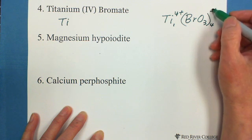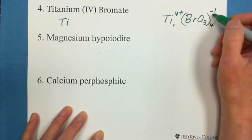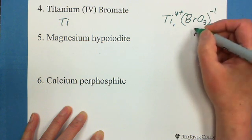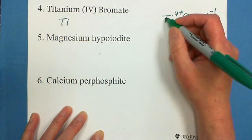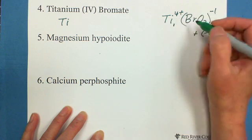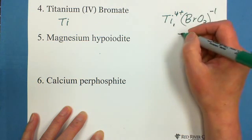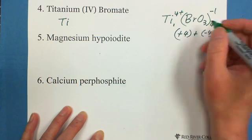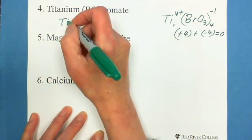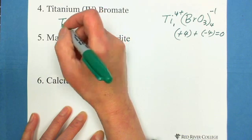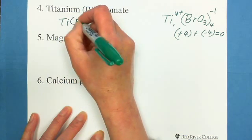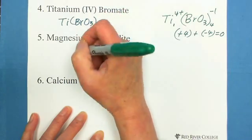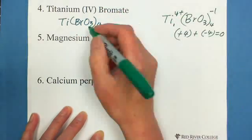So you can see, we have 4 bromate ions, each one negative 1, total is negative 4 charges. This has 1 titanium ion, each one is 4 positive charge, and together equals 0. That's why the formula is Ti(BrO3)4. We remove the charge when you write the formula.